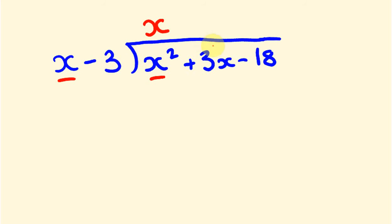To get our second term, we don't write anything down or multiply anything out. What we do is look at this minus 3 and put the inverse — the opposite of minus 3, which is positive 3 — up here. Then we take that positive 3, multiply it by our previous answer, and add it to the next term. Positive 3 times x is 3x, plus 3x is 6x. Since we already have x, the next answer drops down a power, so this just becomes positive 6.